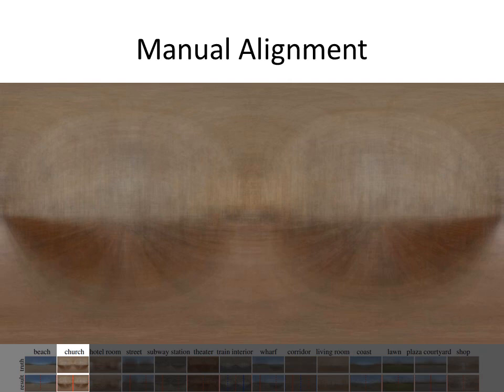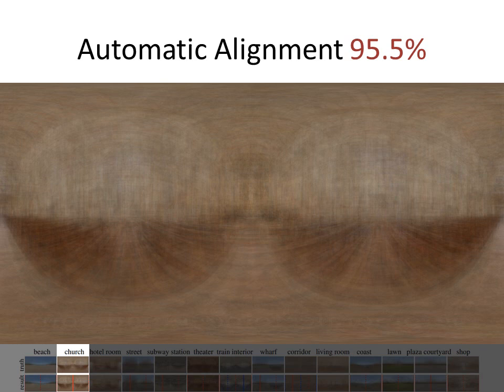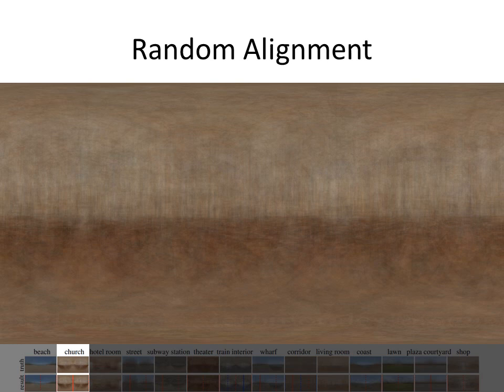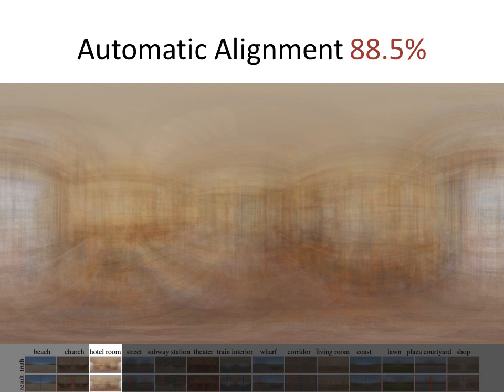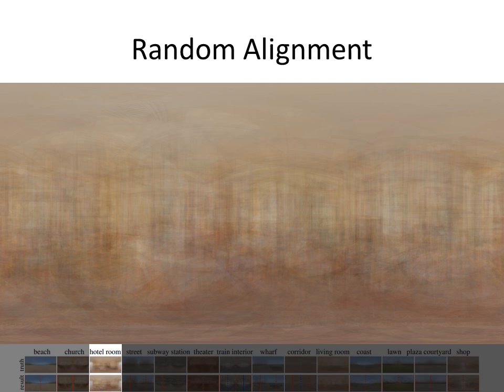Here is the manual alignment for the church place category. This is the result of automatic alignment — notice that the major structures such as the pews, aisles, and altar are apparent in the automatically aligned panoramas. This is the discovered axis of symmetry, and for comparison this is the averaged image from random alignment. Manual alignment of the hotel room category shows the bed and window in the averaged panorama. Here is the averaged panorama from automatic alignment. This category has symmetry type 1, so there are no axes of symmetry. For comparison, here is the averaged panorama from random alignment.